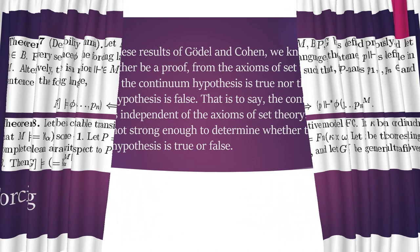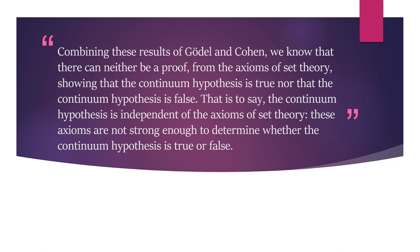In these results of Gödel and Cohen, we know that there can neither be a proof from the axioms of set theory showing that the Continuum Hypothesis is true, nor that the Continuum Hypothesis is false. That is to say, the Continuum Hypothesis is independent of the axioms of set theory. These axioms are not strong enough to determine whether the Continuum Hypothesis is true or false.